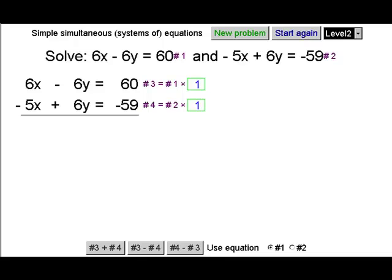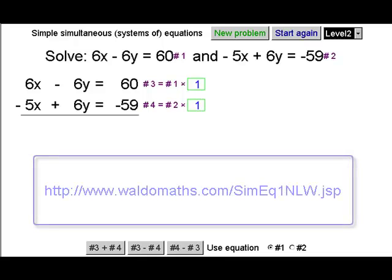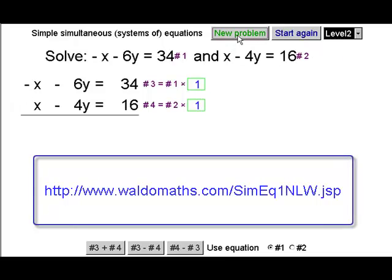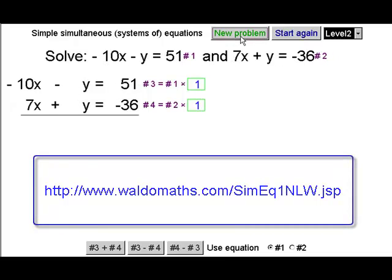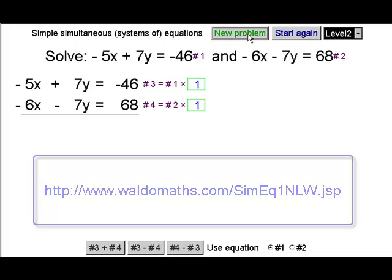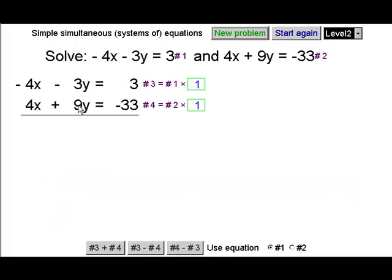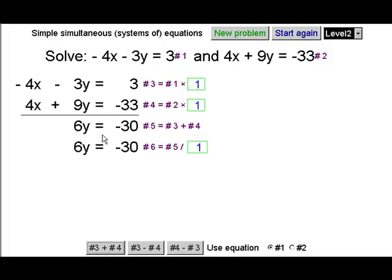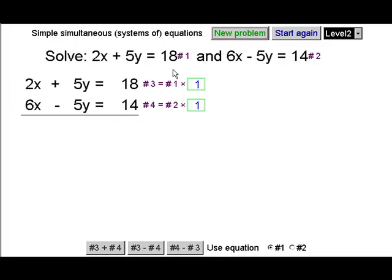Now, this video uses an applet from waldermaths.com. And you can just carry on getting new problems at random by clicking the New Problem button. And each time for this level, this is level 2, each time, if you add the two equations together, then one or other of the variables is eliminated. In this case, the x's vanish because there's a minus 4 and a plus 4.